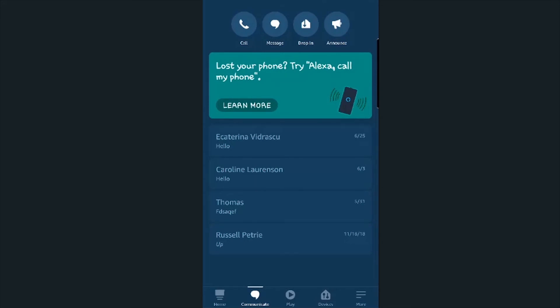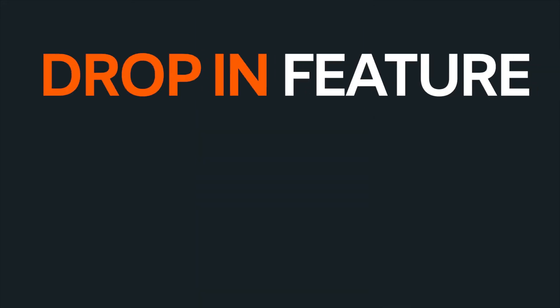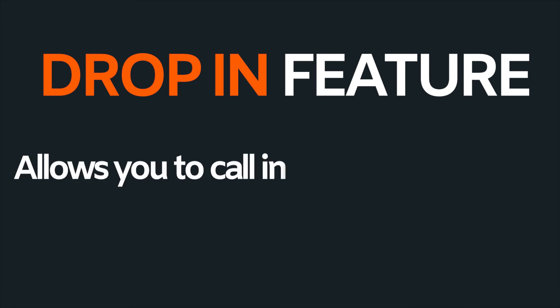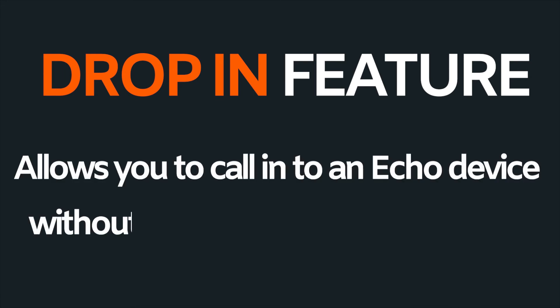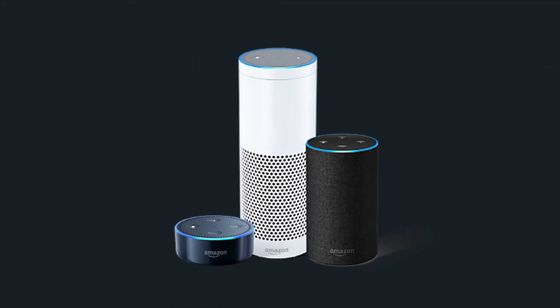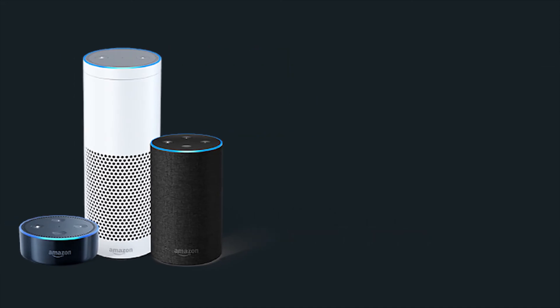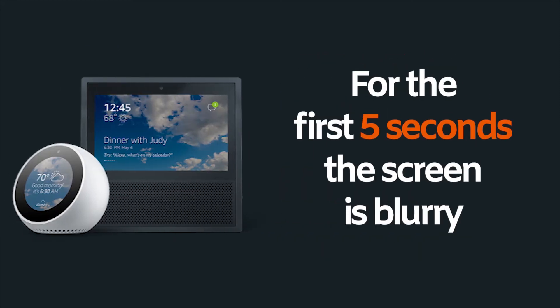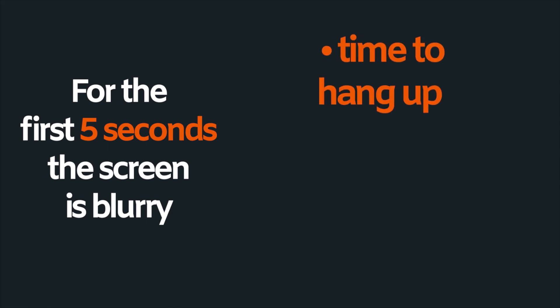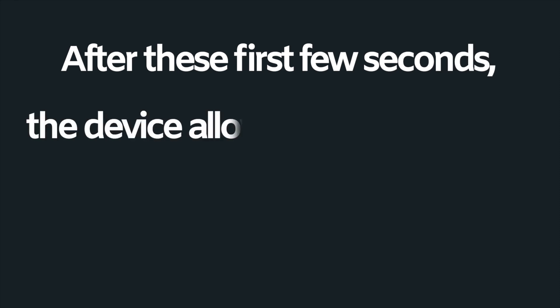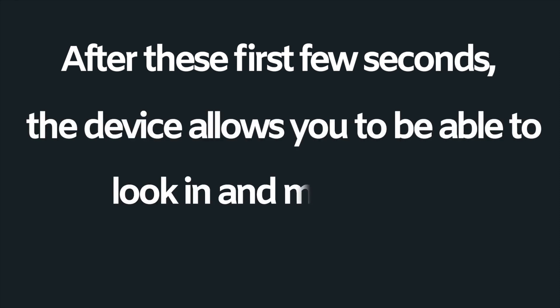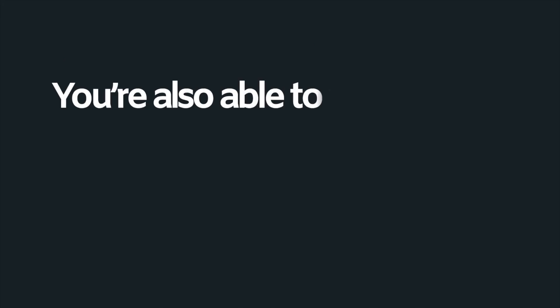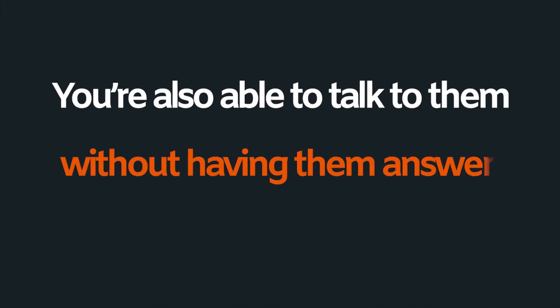At this point, you should consider whether or not you'll want to enable the drop-in feature. The drop-in feature allows you to call in to an Echo device without anyone having to answer it. So if you want to check in on a relative, you could ask the device 'drop in on Mum' and then it will do so. On devices with a camera, for the first five seconds or so, the screen is blurred so you can't see what is going on. This gives the other person time to hang up or move out of the way. After these first few seconds, the device allows you to look in and make sure everything is okay, and you're also able to talk to them without having them answer the device.